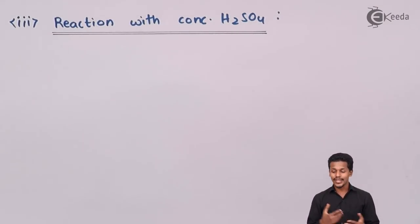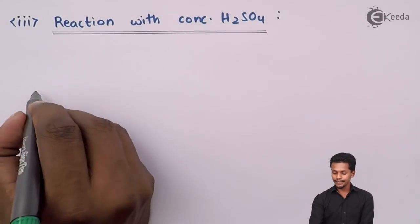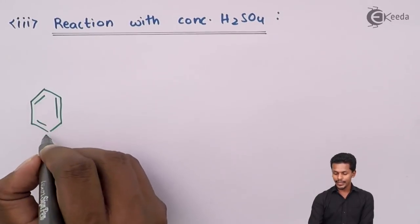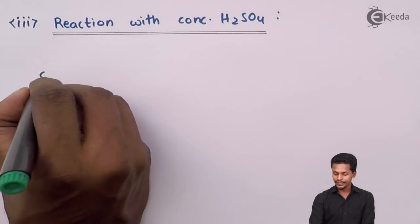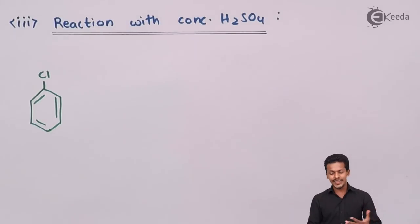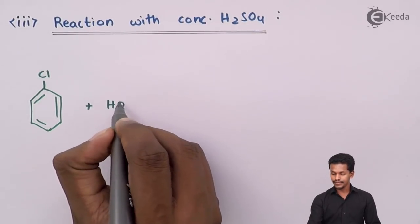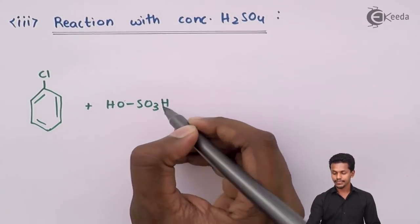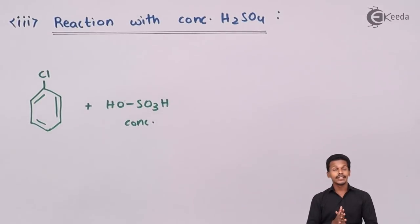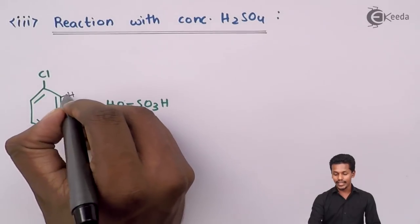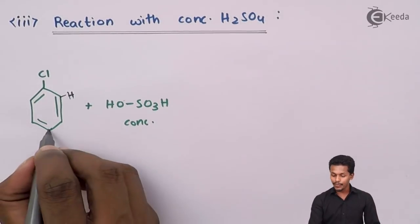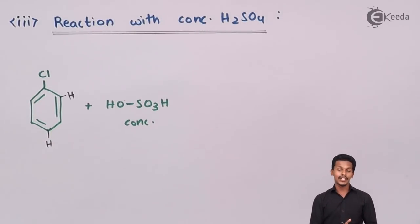The next reaction is with concentrated H2SO4. Suppose we use chlorobenzene and react it with concentrated H2SO4. The structure is very important here because writing the structure clearly helps us understand how the substitution reaction takes place. At ortho and para positions, the SO3H group gets attached — that is the main thing we are concerned with in this kind of reaction.